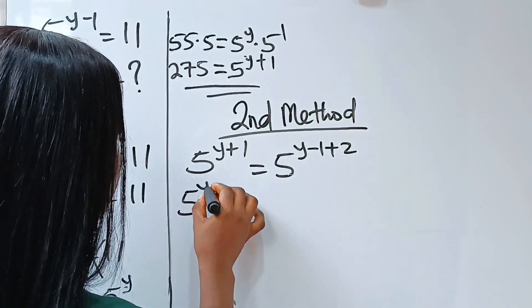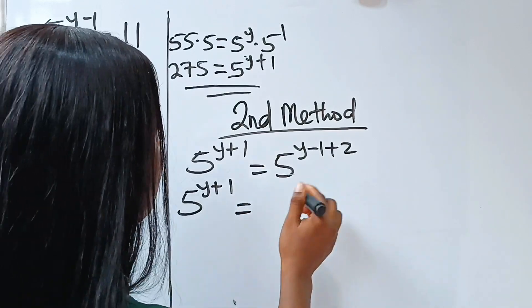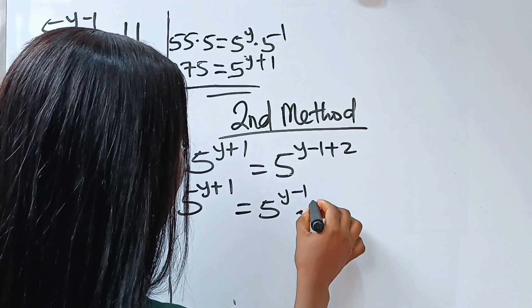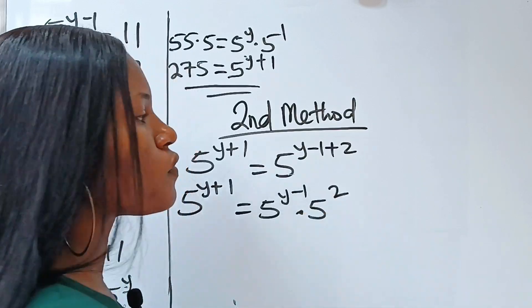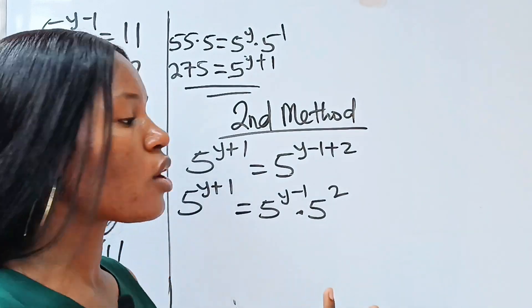So we have 5 to the power of y plus 1 is equal to... this is the same thing as 5 to the power of y minus 1, multiplied by 5 to the power of 2. Yes, if we use our law of exponential indices.